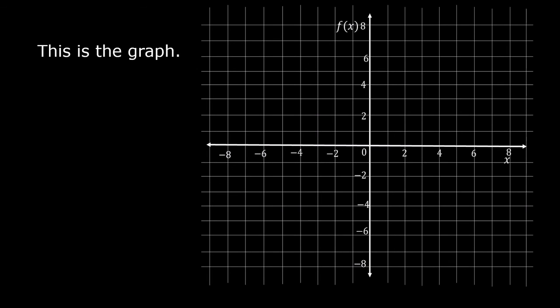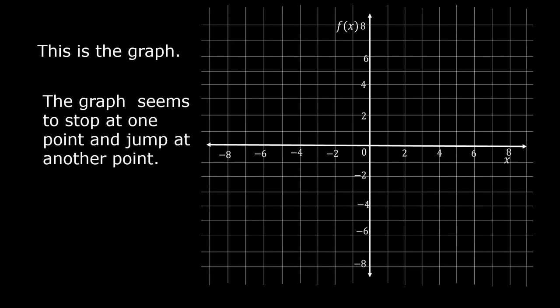This is the graph. The graph seems to stop at one point and jump at another point, then continue moving. Does the point always move upward? No. In some exercises, the point may move downward, or seems to jump from a higher position to a lower position and then continue moving.